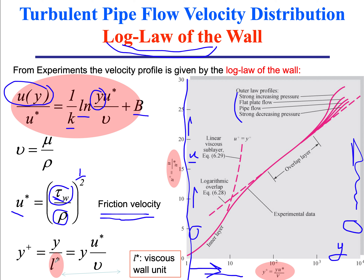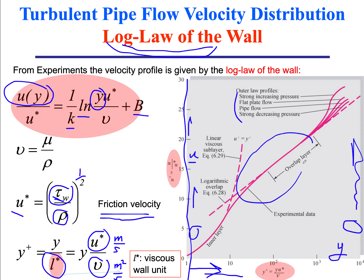From this velocity scale we can derive a viscous length scale called the wall unit, l-star. You get it by dividing the kinematic viscosity by the friction velocity. Kinematic viscosity has units of m²/s and friction velocity has units of m/s, so l-star has units of meters. Researchers using these scaling arguments arrived at the conclusion of a logarithmic profile through smart rather than purely experimental argumentation.